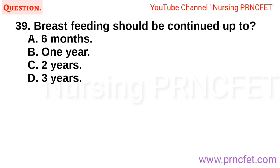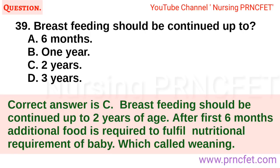Question 39: Breastfeeding should be continued up to: A. Six months. B. One year. C. Two years. D. Three years. Correct answer is C. Breastfeeding should be continued up to two years of age. After the first six months, additional food is required to fulfill the nutritional requirement of the baby, which is called weaning.